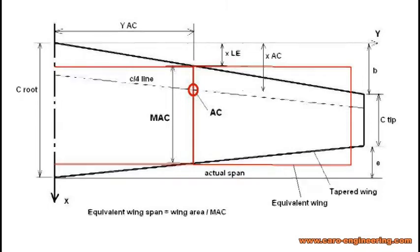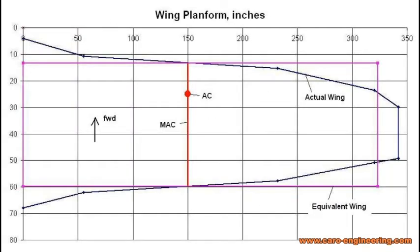As an example, I have used the tapered wing in this sketch and calculated the AC position and from it the MAC. With that information, I can draw in the equivalent wing. The whole point of the exercise is that the AC is the same for either wing. So now we can use the equivalent rectangular wing for subsequent calculations.